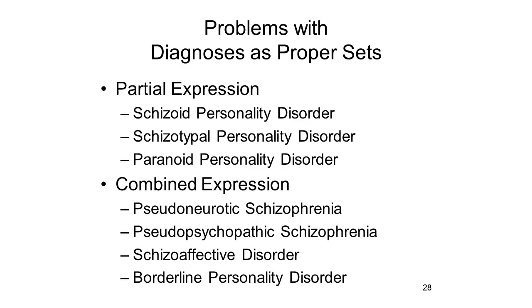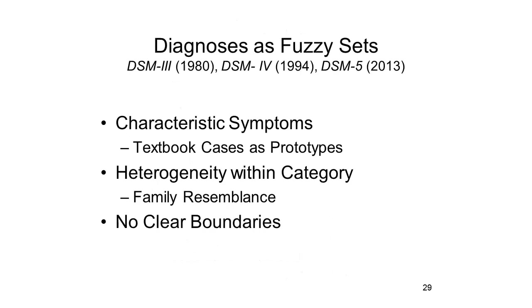And there was also a problem of combined expression: many patients displayed the defining symptoms of many different categories. In the case of schizophrenia, this led to the introduction of new syndromes such as pseudo-neurotic schizophrenia, where there was a lot of anxiety, pseudo-psychopathic schizophrenia, where there was a lot of antisocial behavior, and schizoaffective disorder, where the patient combined some symptoms of schizophrenia with some features of manic depressive illness. And the term borderline personality disorder was introduced to cover patients who displayed the symptoms of both psychosis and neurosis—literally on the border between these major diagnostic categories.